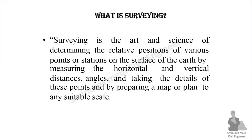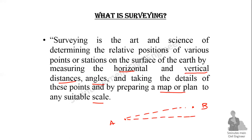Let's look at the components: horizontal distance, vertical distance, and the angle. Points A and B are used to illustrate these. The horizontal distance is measured between two points. The vertical distance is also measured. The angle, denoted as theta, is the angular measurement between the two stations.